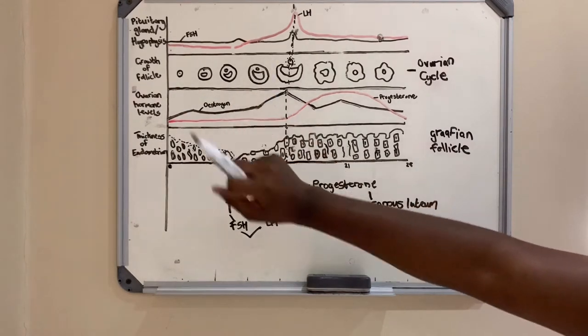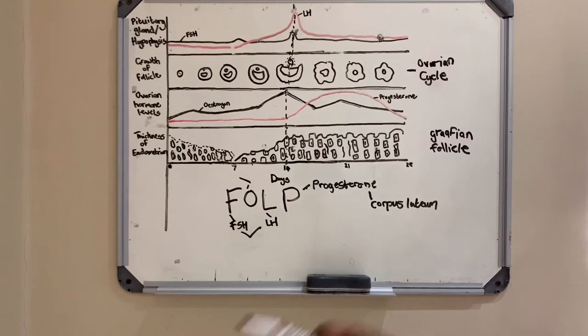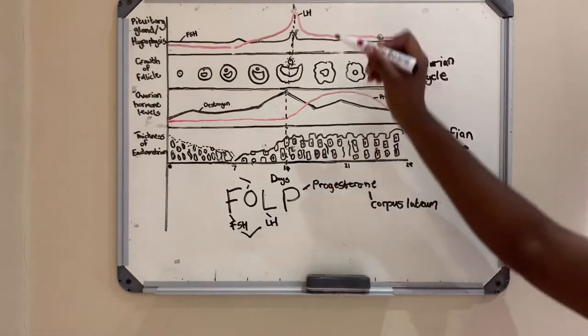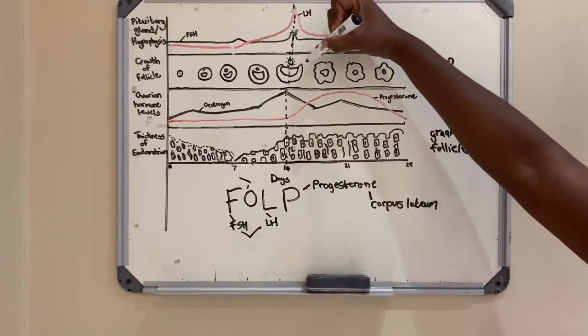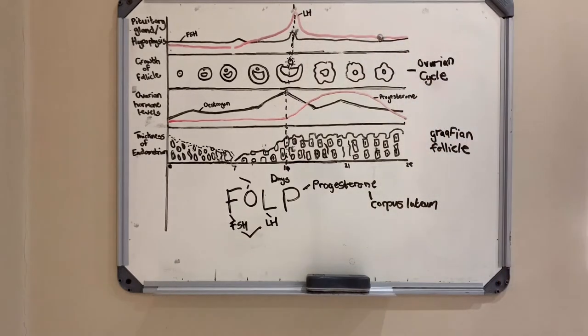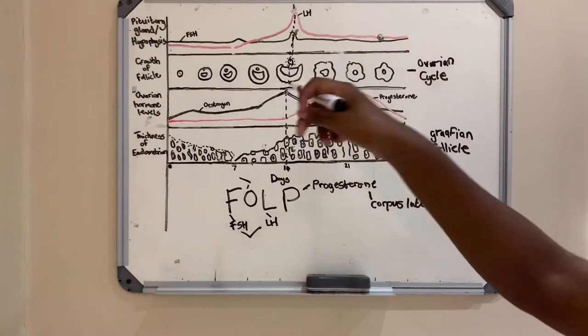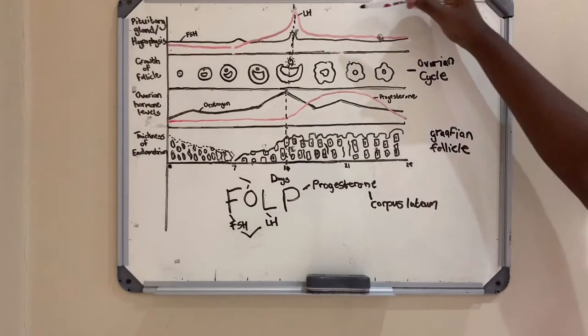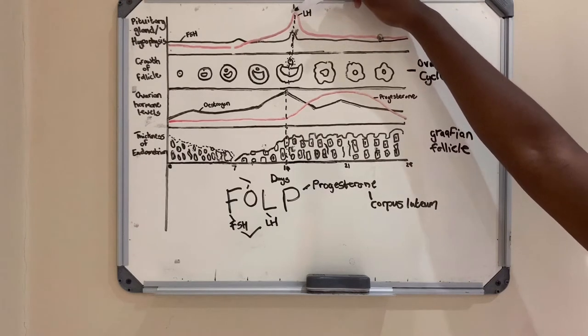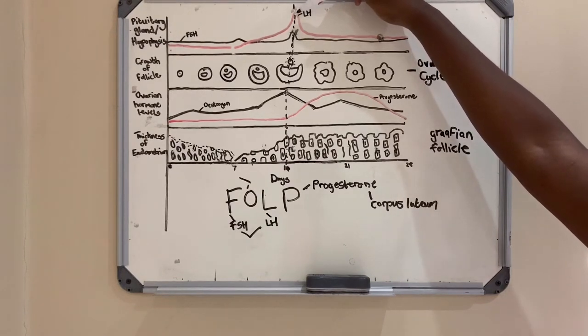On day 14, day 14 is a very important day because the secondary oocyte, which is the egg cell, is released, and that release happens because of LH, the luteinizing hormone. That's why on this graph you see that on day 14, LH peaks - it is the highest - and that is because it needs to stimulate the release of the secondary oocyte.